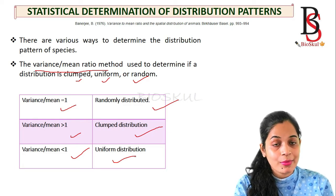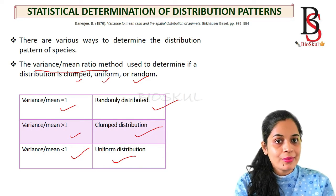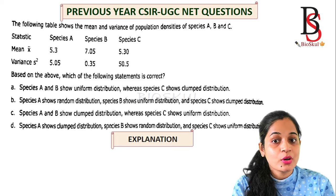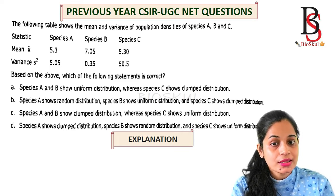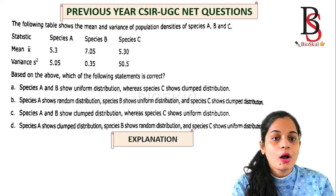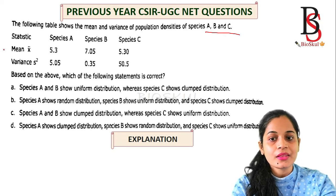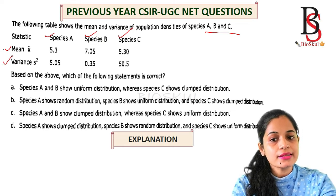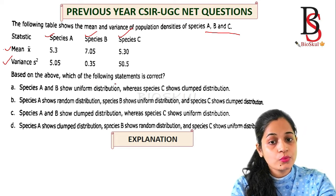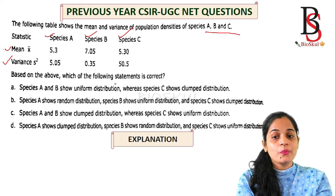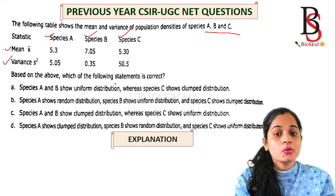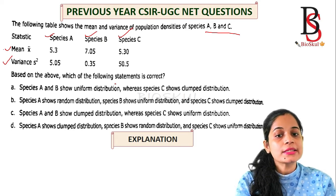Now you will be able to solve a CSIR NET question related to this topic. This is a previous year CSIR UGC NET question: the following table shows the mean and variance of population densities of species A, B, and C. Based on the above, which of the following statements is correct? The mean and variance are given, and the question asks which species shows which type of distribution. We calculate this using the formula: variance divided by mean.